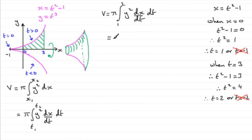Now we substitute for y² and dx/dt. Since y = t³, we have y² = (t³)² = t⁶. For dx/dt, we differentiate x with respect to t: dx/dt = 2t. We substitute these into the integral.